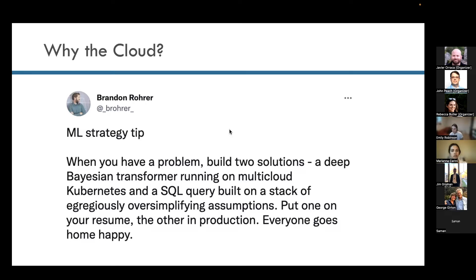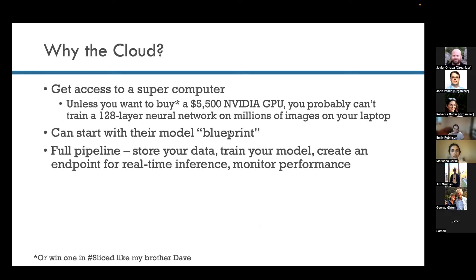But in all seriousness, the real reason is that you can get access to a supercomputer. There are certain types of models that are quite difficult to train with the resources you most likely have in your laptop — for example, a many-layered neural network on millions of images. Another reason is that you can start with a cloud services model blueprint, which is the case with the image classification model I'll discuss. And finally, as we saw with the SageMaker description, it offers a full pipeline — you can store your data, train your model, create an endpoint for real-time inference, and monitor performance, all in one product.